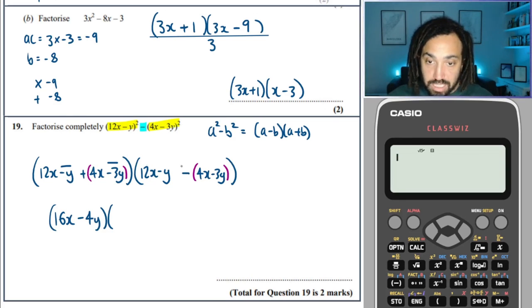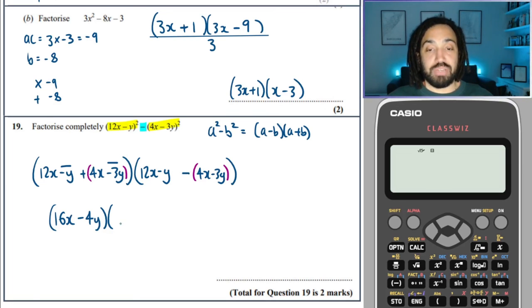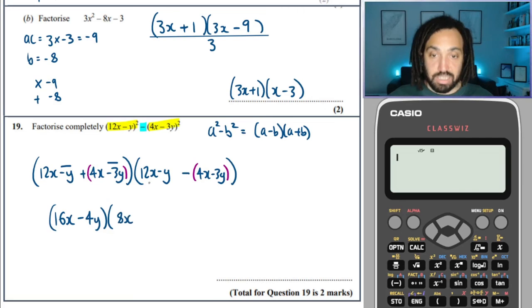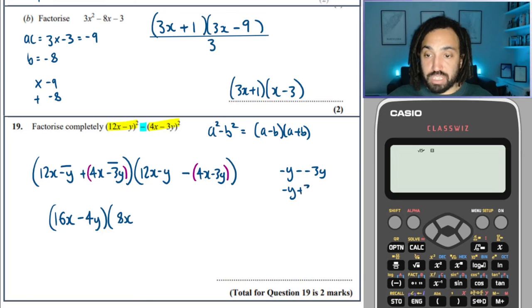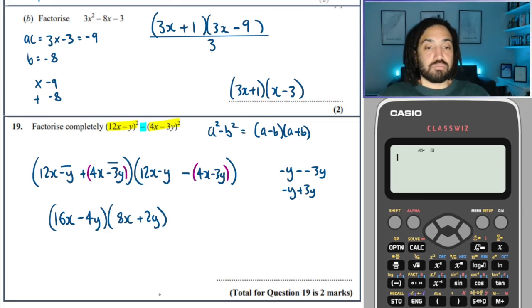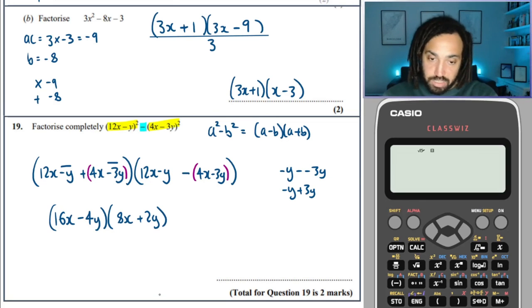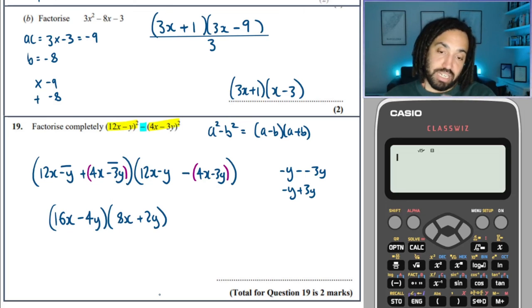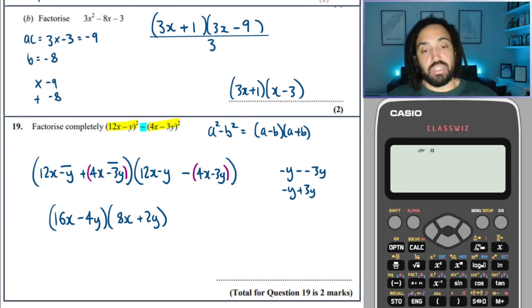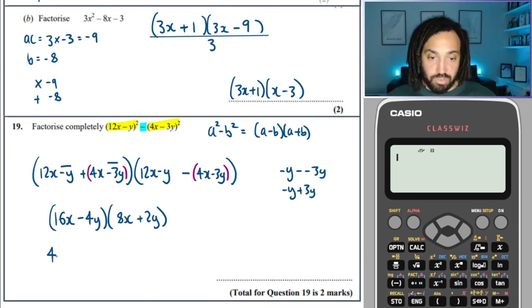Over here, what we've got, we've got 12x minus 4x. That makes a total of 8x. And over here, we've got minus y minus minus 3y. So that's minus y minus minus 3y is the same as minus y plus 3y, which is plus 2y.